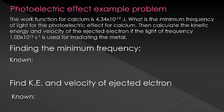So the work function for calcium is 4.34 times 10 to the negative 19th joules. Remember, the work function is the amount of energy it takes to remove an electron from a metal. Now I ask you what the minimum frequency of light required to eject the electrons is.